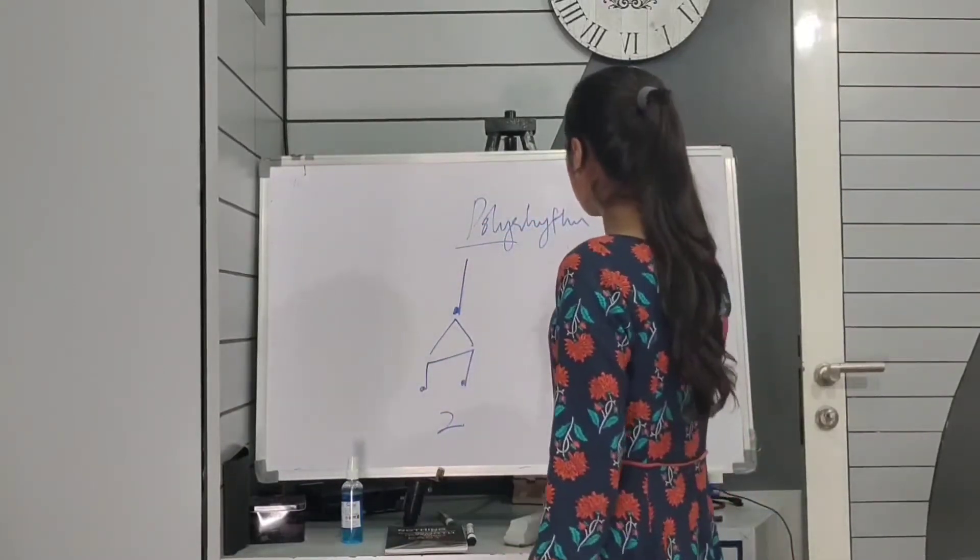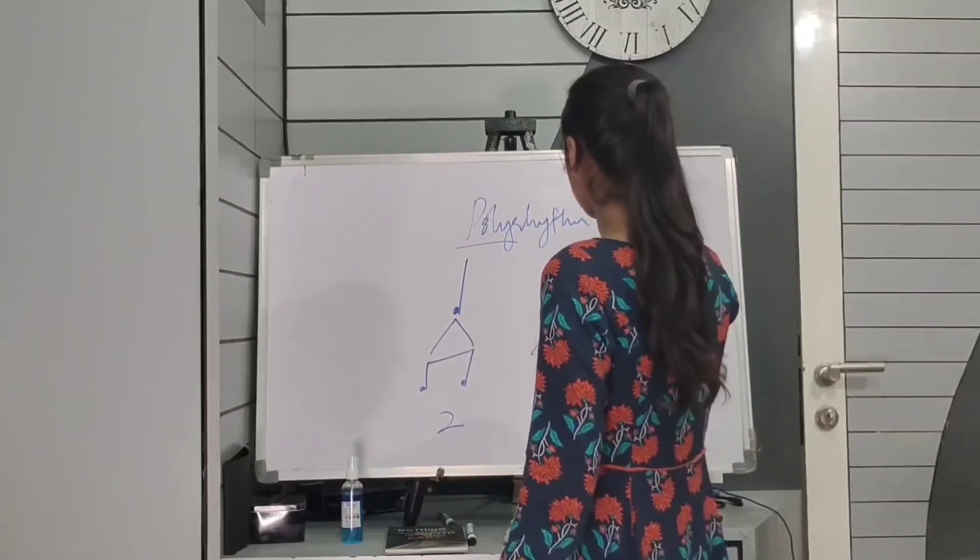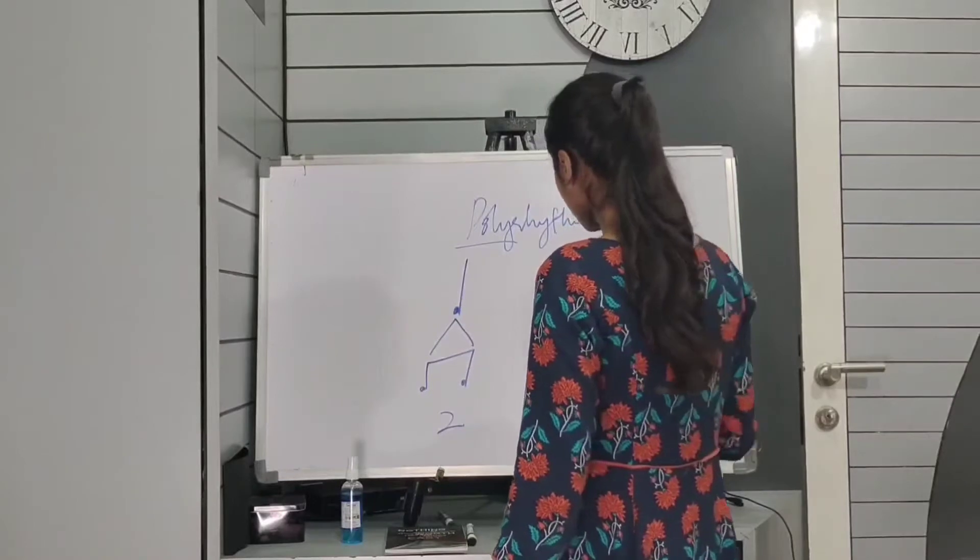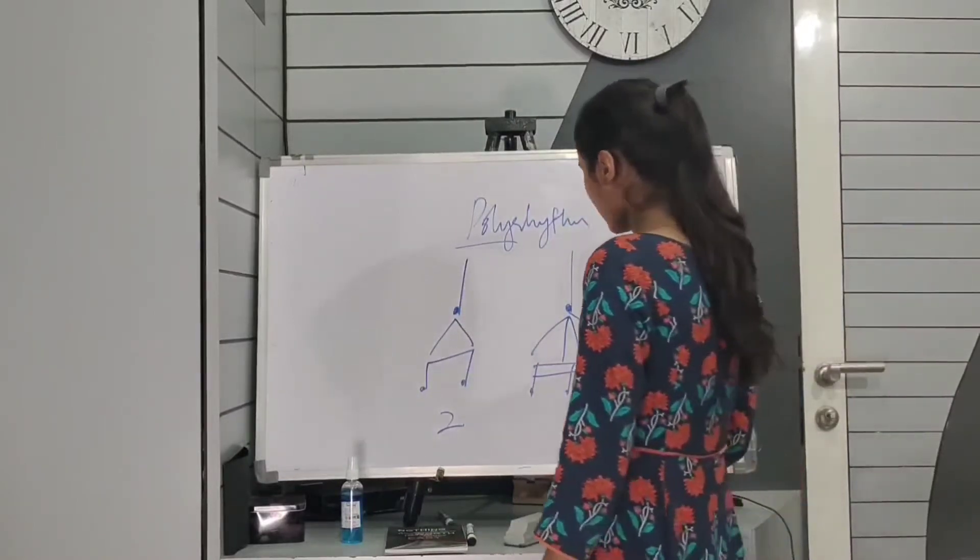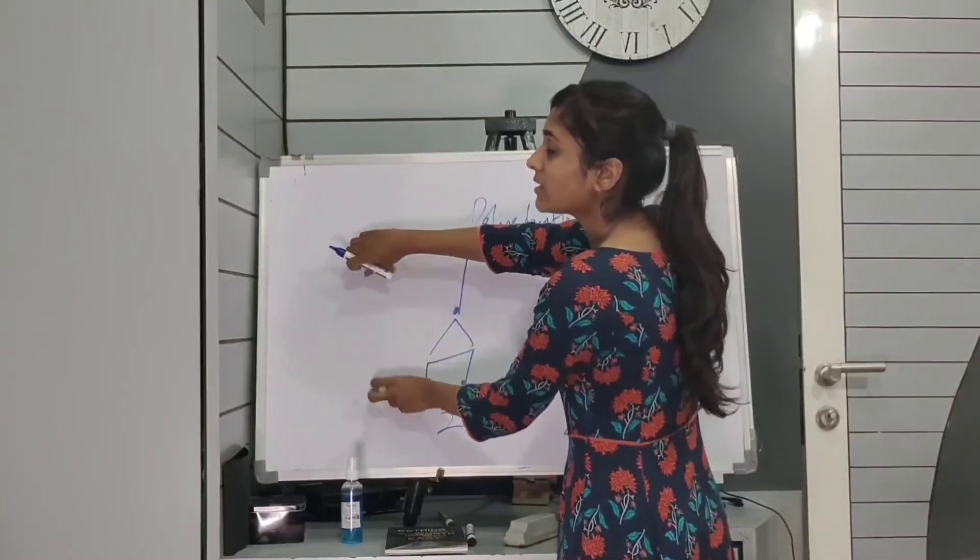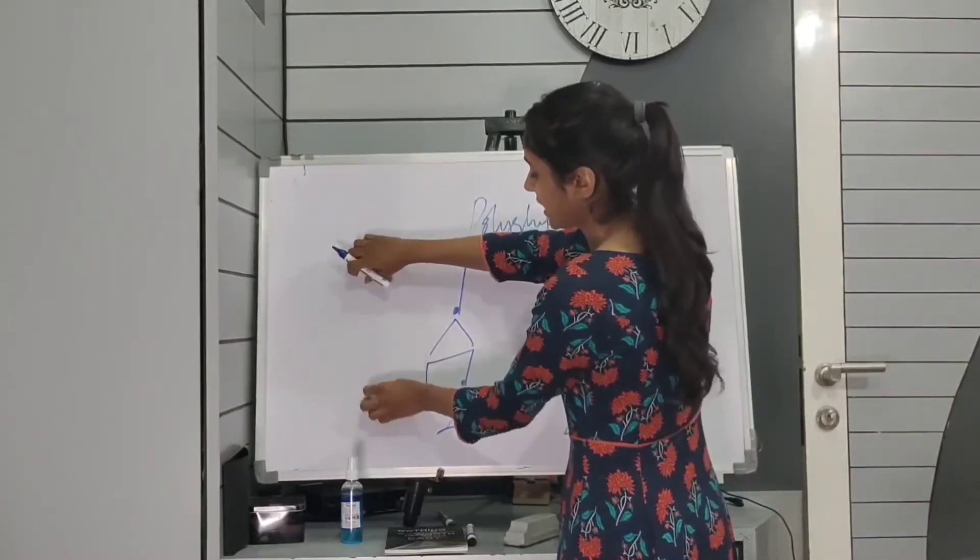And if I divide this same one beat, same quarter note into four equal parts, it's going to give me sixteenth notes. Four parts, four notes in one beat. So I have to play like one e and a, two e and a, three e and a.